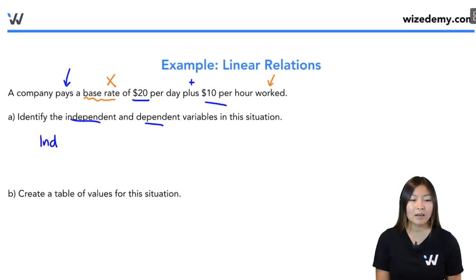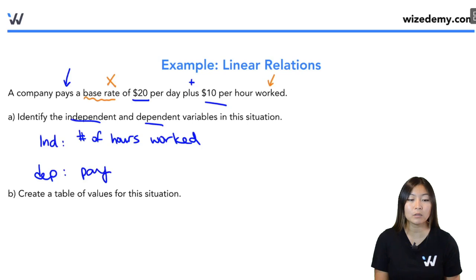So the independent variable is going to be the number of hours worked. The employee picks how many hours they work. And based off of that, the dependent variable is going to be the amount of pay based on how much they work. So I'm going to give these some variables. Let's call the number of hours worked our X and the amount of pay Y. You can use any letter you want, but I'm just going to use X and Y because that's what we're more familiar with.